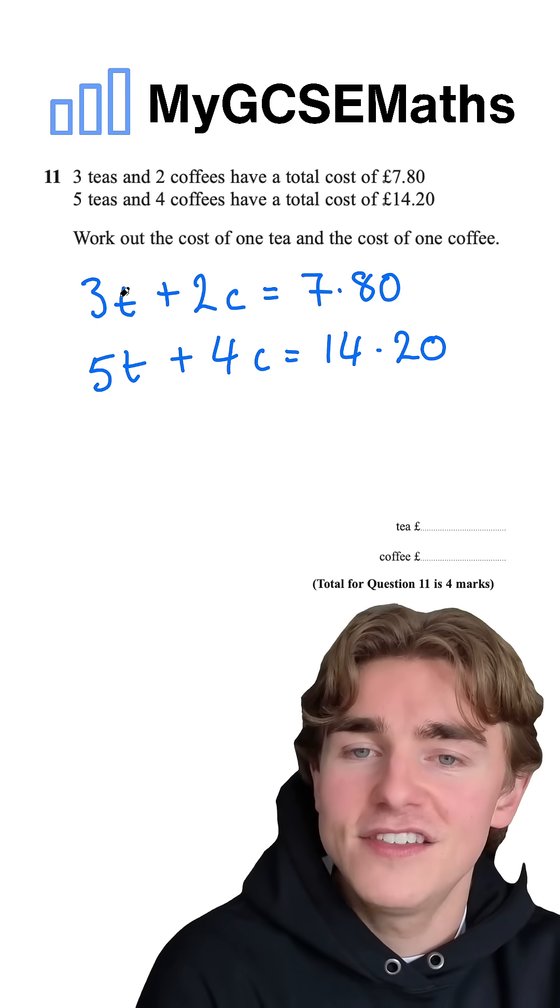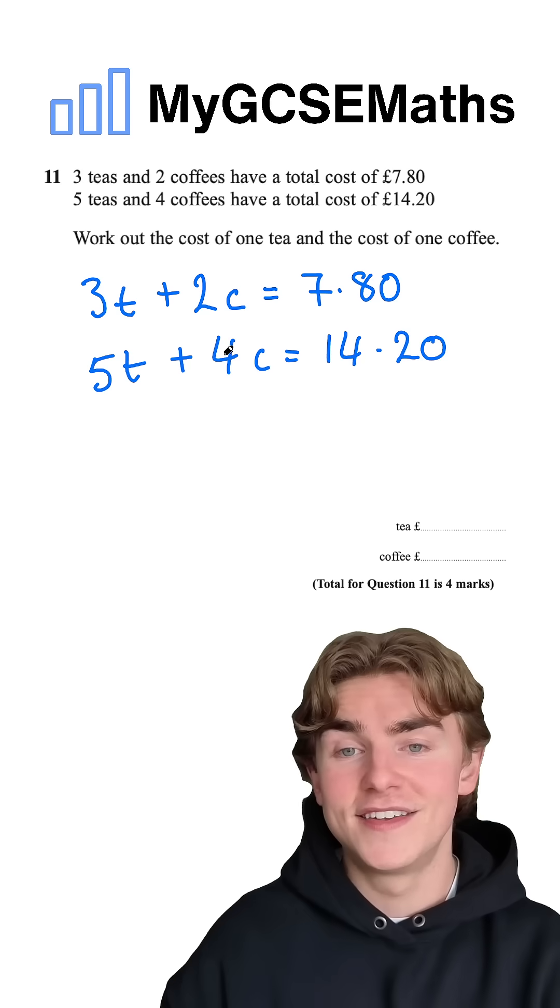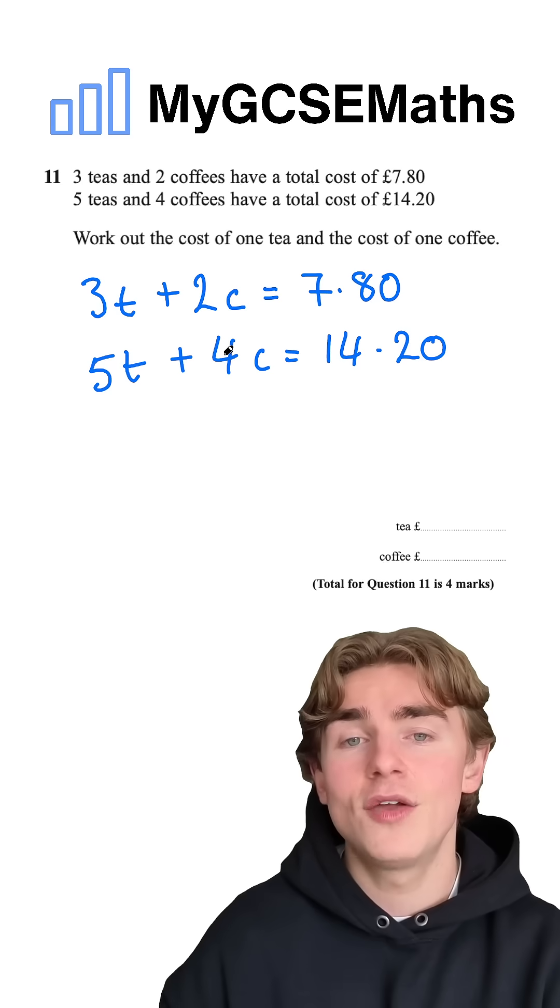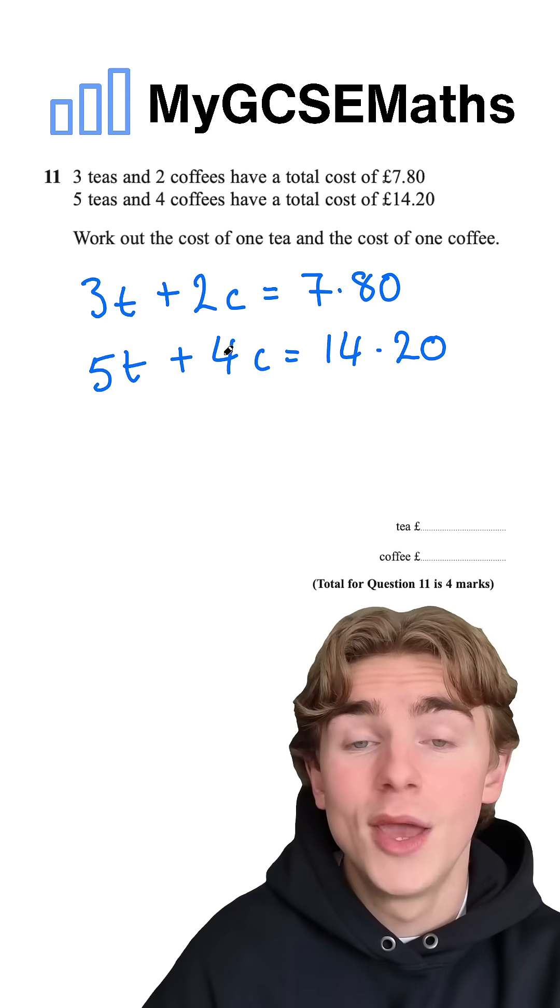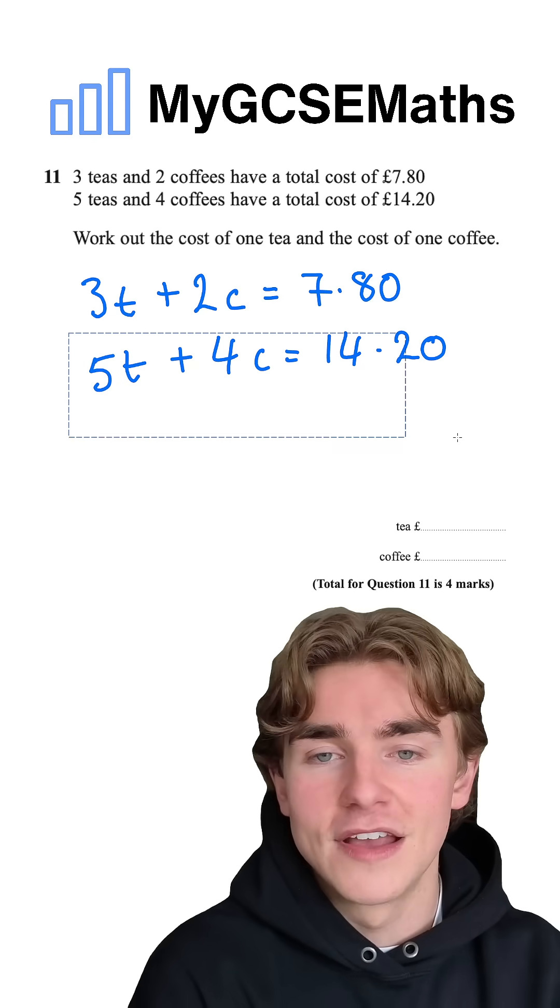So next to our teas, we have a three and a five. Next to our c's, we have a two and a four. We could do the t or the c, but I'm going to go with the c. Why? Because currently we have a two and a four. If we multiply our first equation by two, we're going to have a match next to our c's because two times two gives us four.